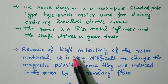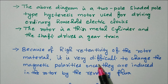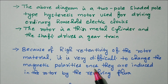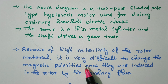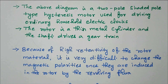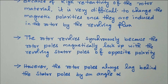Because of the high retentivity of the rotor material, it is very difficult to change the magnetic polarity once it is induced in the rotor by the revolving flux. High retentivity means it is very difficult to change the magnetic polarity.